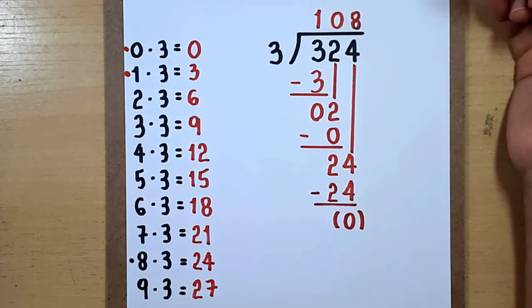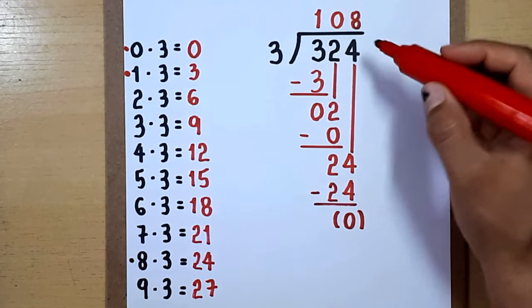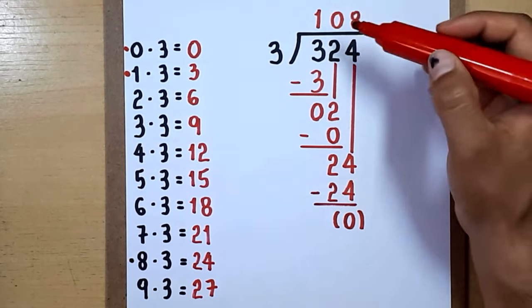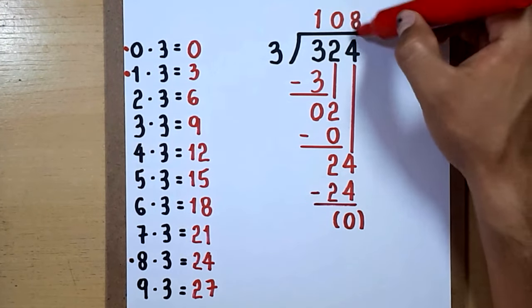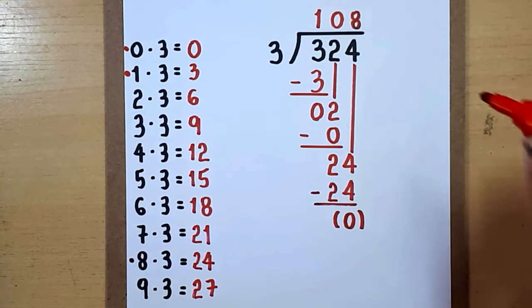For instance, if you have 324 dollars and you want to divide that money among three people, you can give 108 dollars for each one of them. If you liked this video,